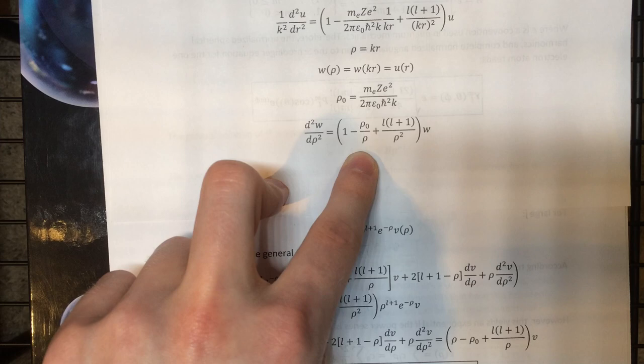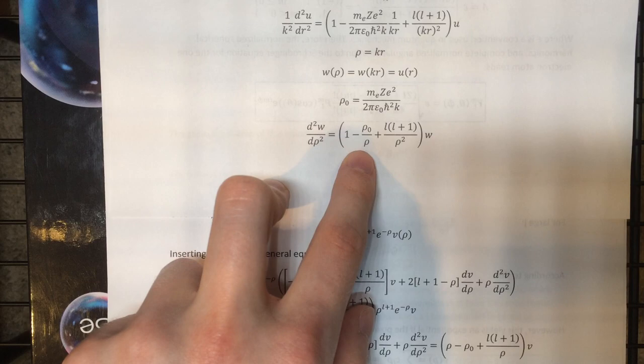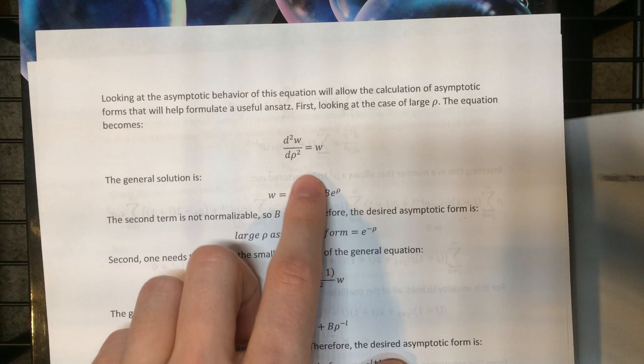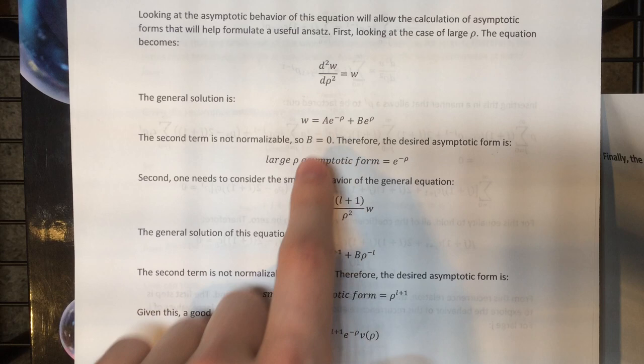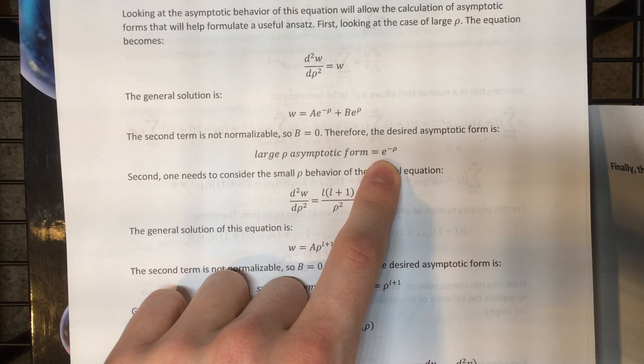First we look at the limit of large rho. That zeroes the two correction terms, so we get a simple differential equation, which has an exponential solution. Only the decaying exponential is normalizable, so we throw out the growing one by setting b equal to zero, and that's our asymptotic form for large rho.